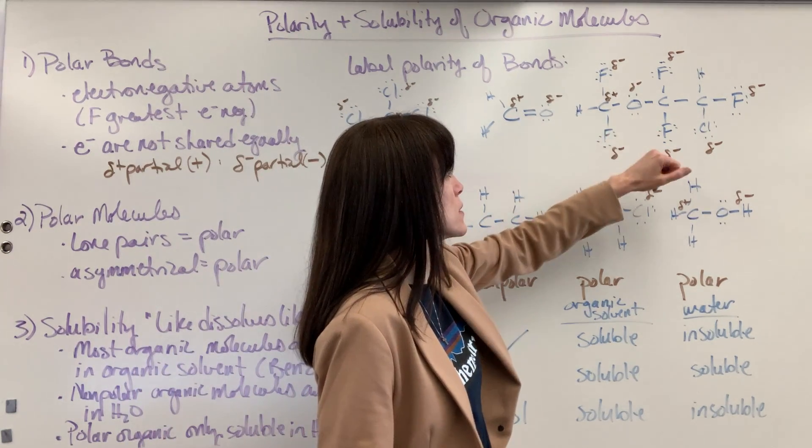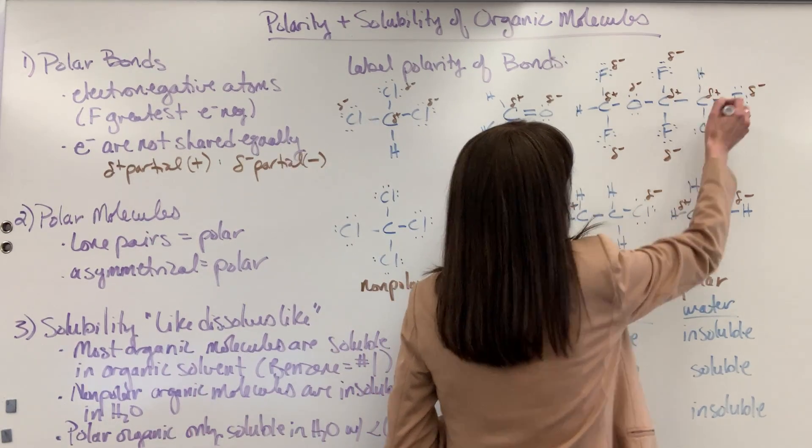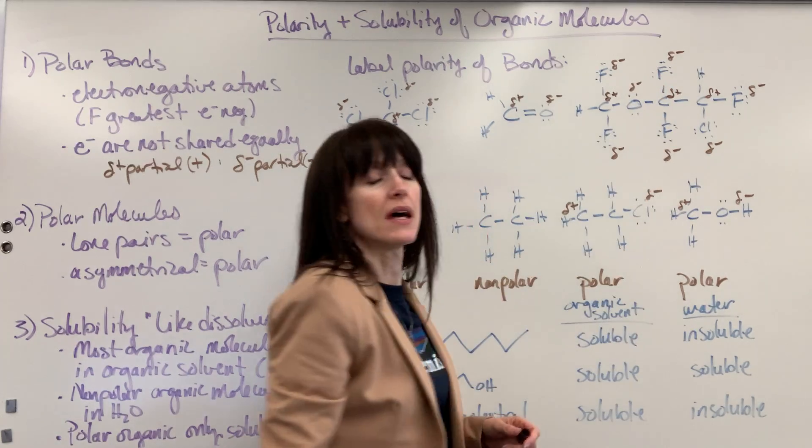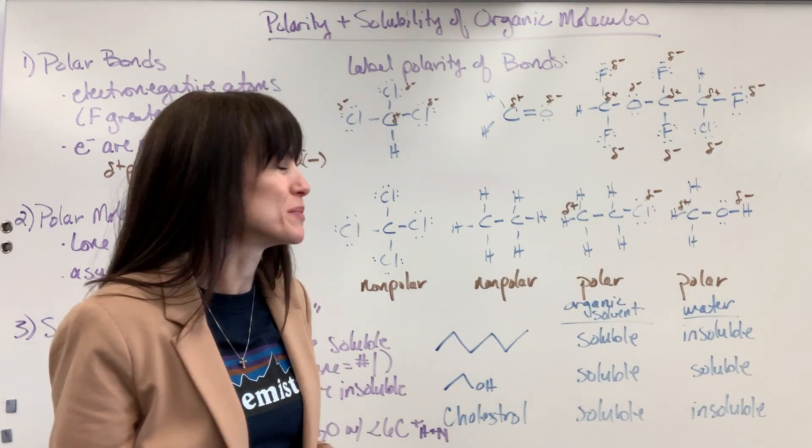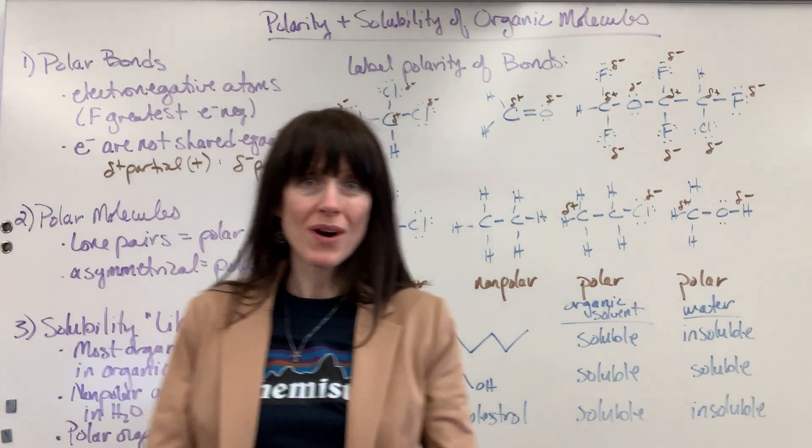Oxygen, of course, is going to be your partial negative. Let's also put here that those carbons are your partial positive. Again, those halogens, the alkyl halides, those are going to be partial negative. The chlorine and the fluorine as well. Nice. Moving on.